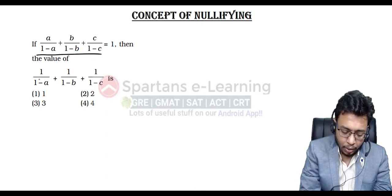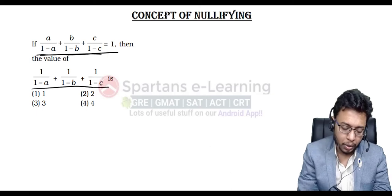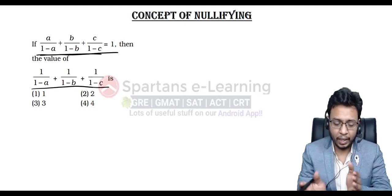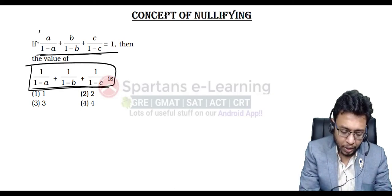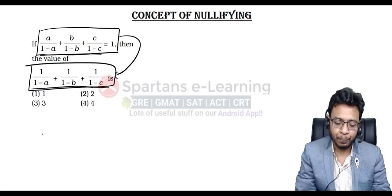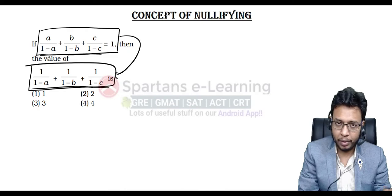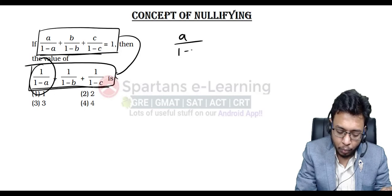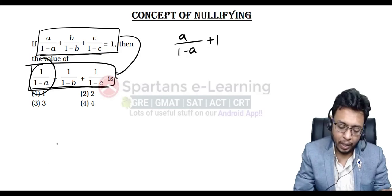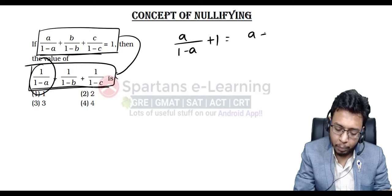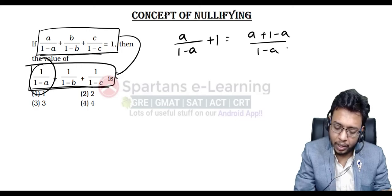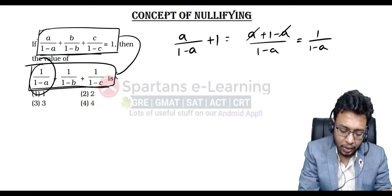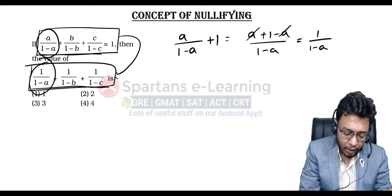The question is the given condition, and you have to change your condition to orient itself in the direction of your question. From the given condition, you have to derive the expression in the question. In the condition you have a/(1−a), but in the question you have 1/(1−a). If you add plus 1 to a/(1−a), you take LCM and get (a + 1 − a)/(1−a), the a's cancel, and you get 1/(1−a). So adding 1 to each term in the condition gives you the question direction.